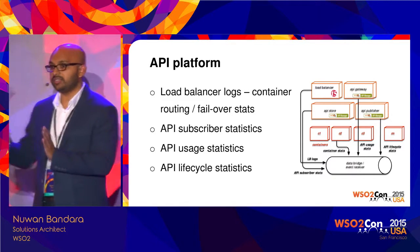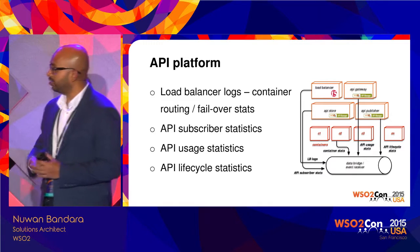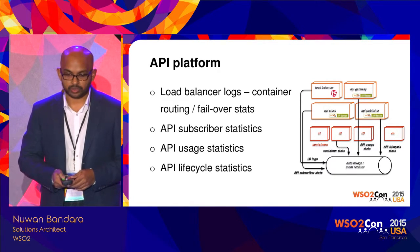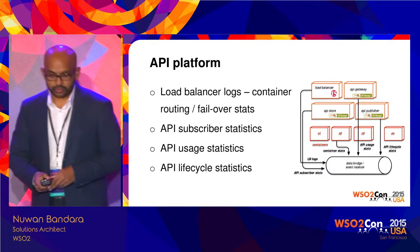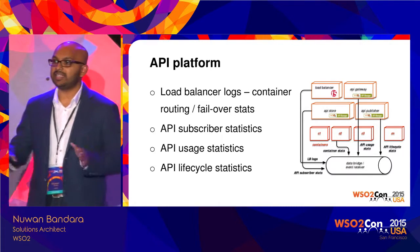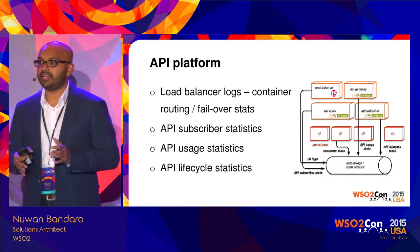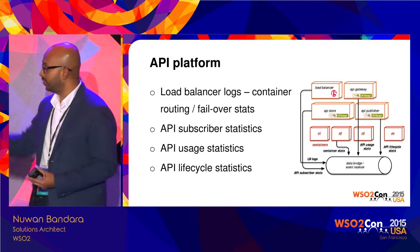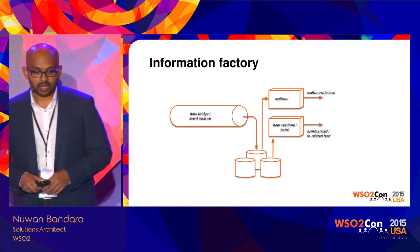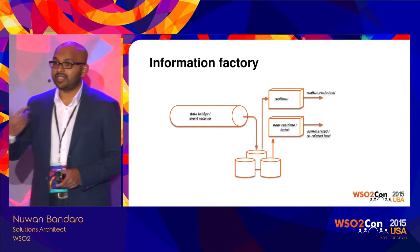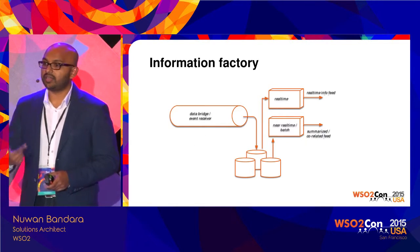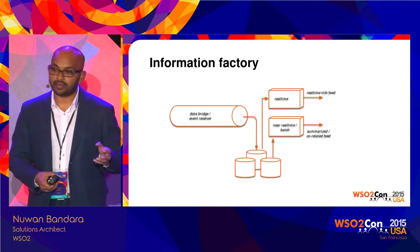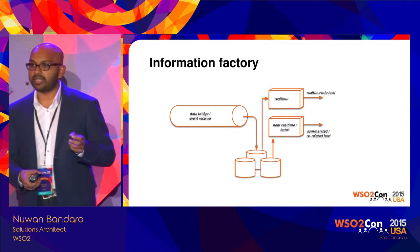This is the point where a user enters your system. I'll tell you about how to correlate things — that is something we already have in our solution. Now the data part is sorted: at each layer we got all the data into our queue, which is the data bridge and event receiver. Now we need to generate information, so we are creating something called an information factory.